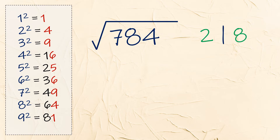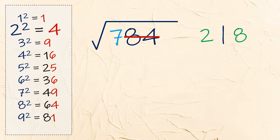Second step: eliminate the last two digits of the given number. Now we only have 7. Look for a square that is closest to 7, which is less than that or equal to it. The squares closest to 7 are 4 and 9, but since 9 is too much, we're going to use 4, and the square root of 4 is 2. That will be the first digit of our answer.